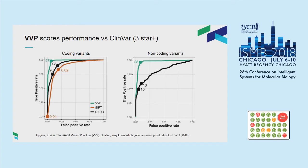VVP was updated recently from a simpler prior score. It performs well at predicting deleteriousness and pathogenicity against ClinVar pathogenic variants rated three stars or above — meaning highly confident pathogenic variants. ROC curves show VVP performing very well compared to SIFT and PolyPhen. A key advantage of VVP is that it can score non-coding variants, which SIFT cannot do and PolyPhen does not do well. So far we have considered only variants and allele frequencies.